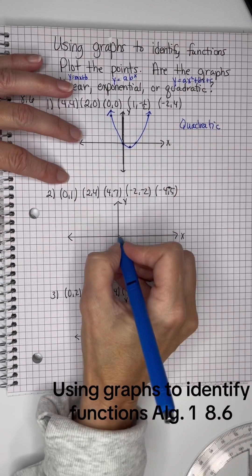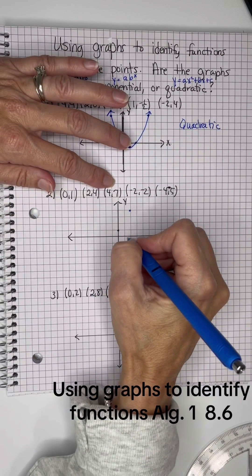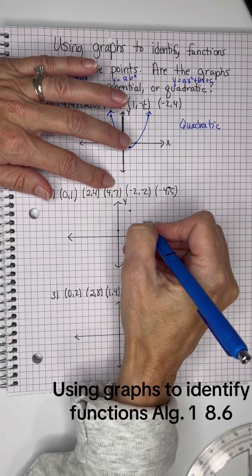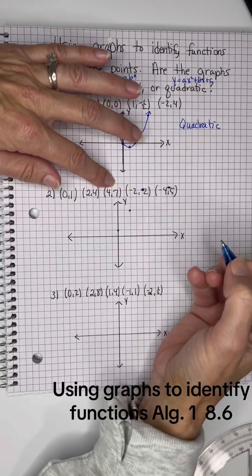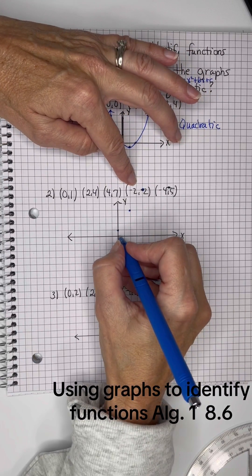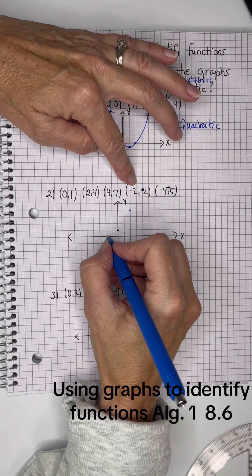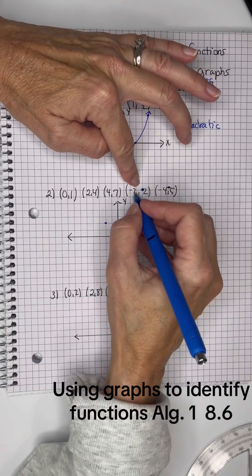Alright, on this one, 0, 1, 2, 4, 4, 7, looks like I didn't make this one big enough. Okay, negative 2, 2, negative 2, 2, and negative 4, 5, negative 2.